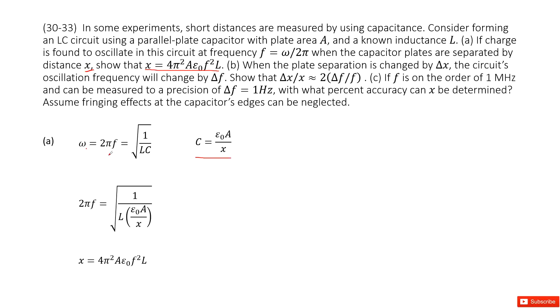The angular frequency for the LC circuit can be written as 2πf equal to the square root of 1 over LC. Now, you can put C inside, so the equation looks like this one. Just reorganize this equation. We can get the function for x equal to 4π² A ε₀ f² L. So proved.